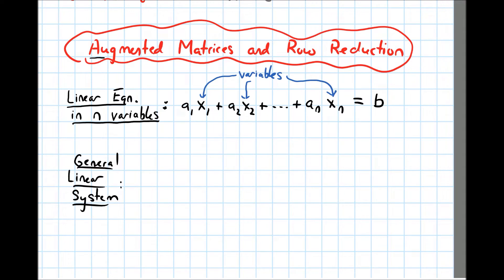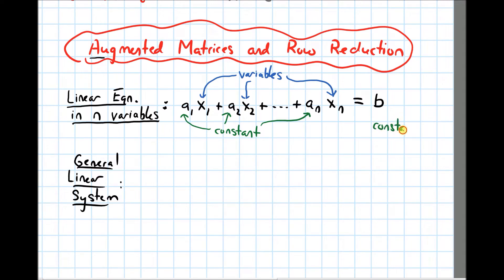All of the other terms in this equation are constants. So a1 is a constant, and a2, and a3, all the way up until an — those are all constants. Sometimes they're called coefficients of the variables. And the b over here, this is also another constant. Constant just means it's a number, it's already determined. So a linear equation in general looks like this if there's n variables.